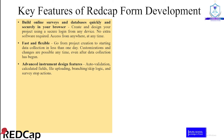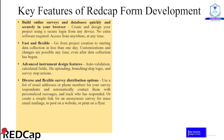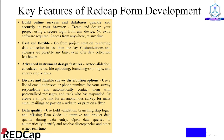Advanced instrument design features available in REDCap include auto validations, calculated fields, file uploading, branching, skip logic, and survey stop actions. There are diverse and flexible survey distribution options, including the use of a list of email addresses or phone numbers to automatically contact respondents with personalized messages and track who has responded, or create a simple link for anonymous surveys for mass emailing, posting on a website, or printing on a flyer. Data quality is guaranteed through field validation, branching, skip logic, and missing data codes, as well as open data queries to automatically identify and resolve discrepancies in real time.